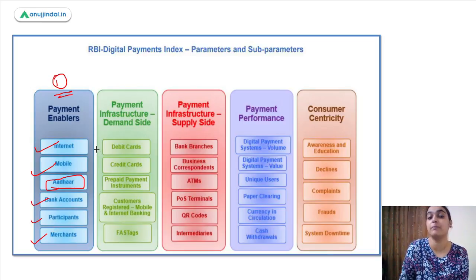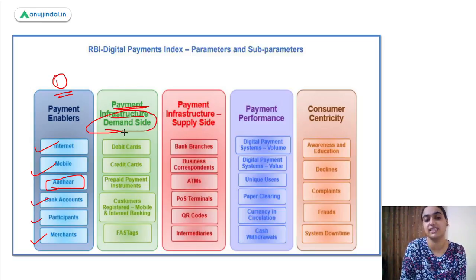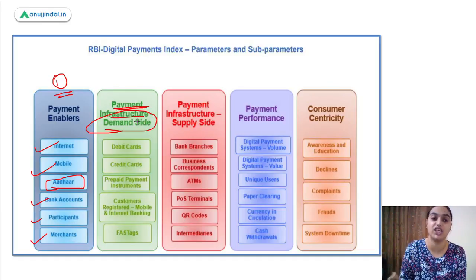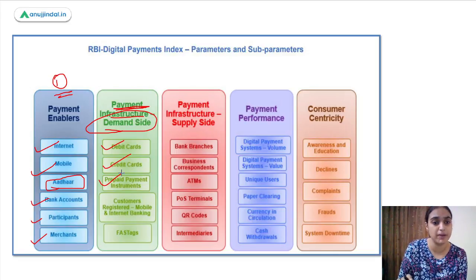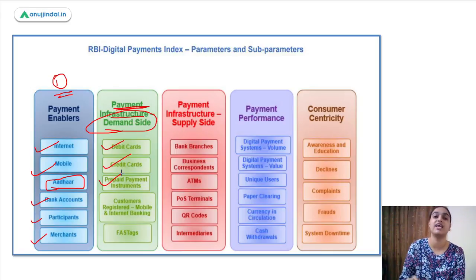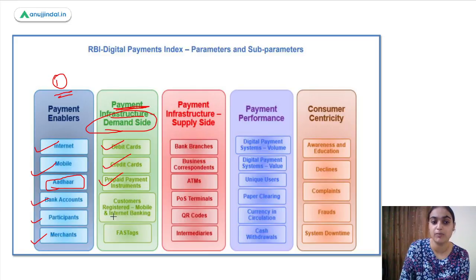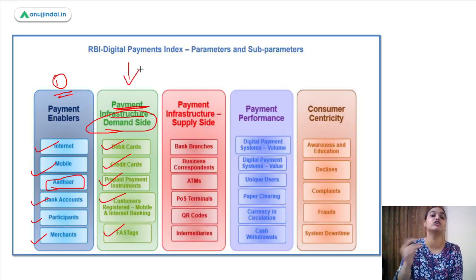Talking about payment infrastructure: on the demand side, what you need to make digital payments includes debit cards, credit cards, and prepaid payment instruments. Debit and credit cards are kinds of prepaid payment instruments. We also have other prepaid payment instruments like e-wallets. We also need customer-registered mobile and internet banking. These are payment infrastructures that help in digital payments.